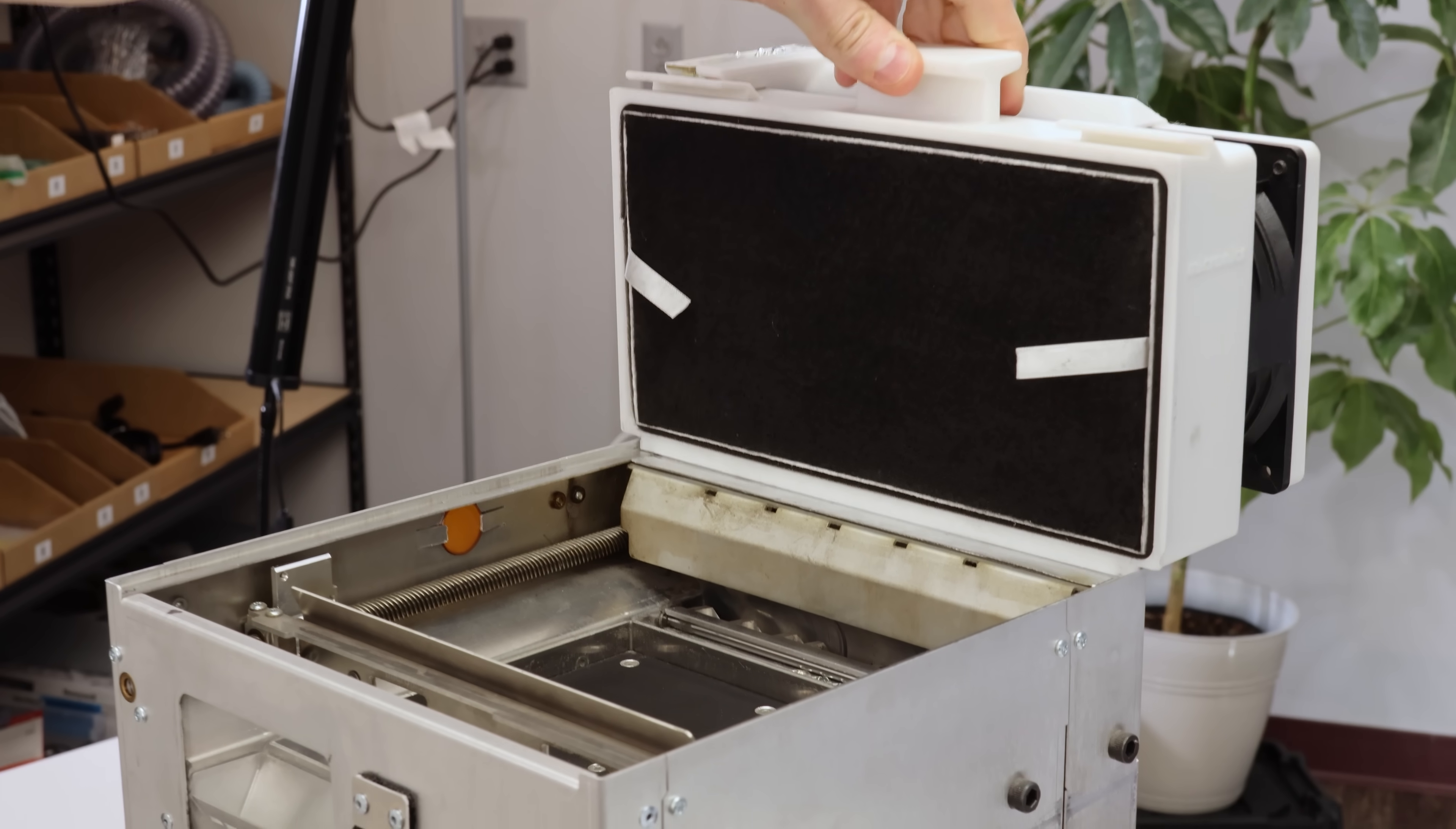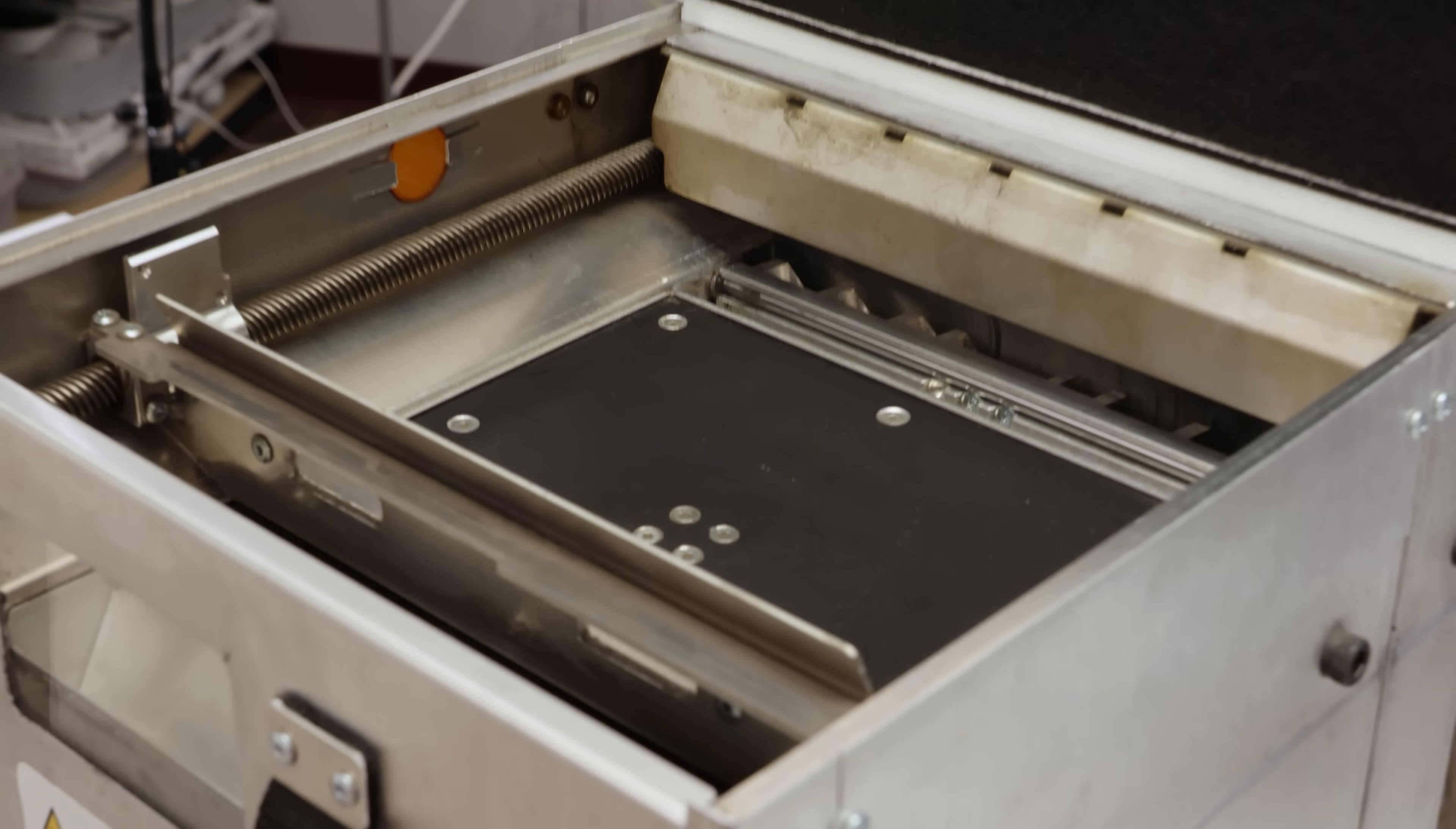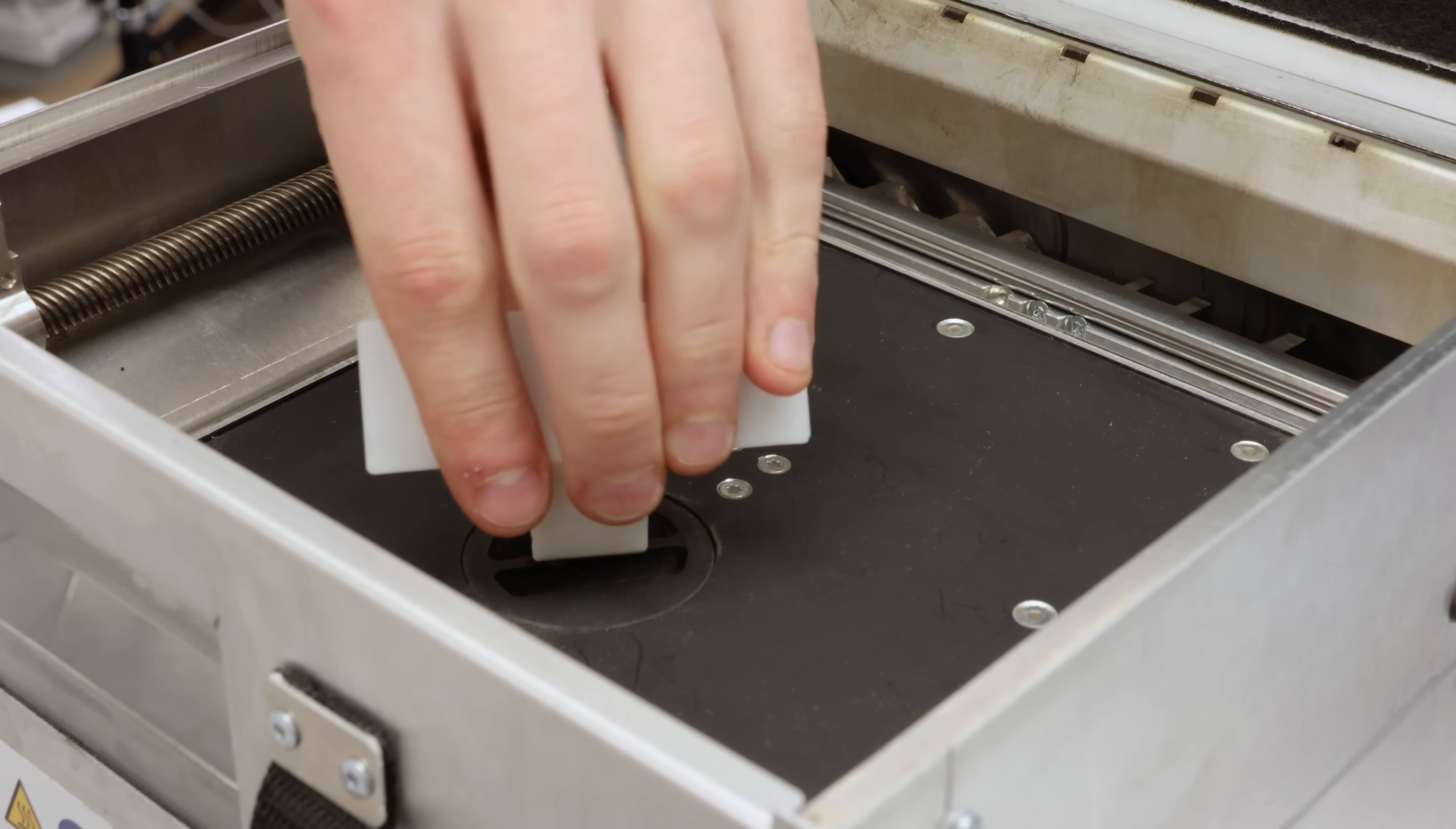Now, attach the dust extractor to the back of the build chamber. Make sure the build plate is all the way up and the recoater is fully forward. Open the fill port. If it's stuck, use the back of the sweeping tool to loosen it.